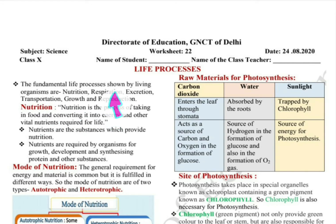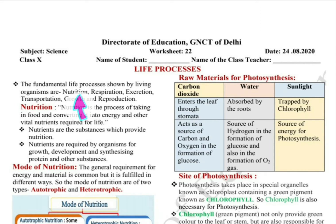What does life process mean? It is necessary to maintain the living organism — whether it is a unicellular organism like amoeba, bacteria, paramecium, plasmodium, or multicellular organisms like trees, plants, humans, animals, dogs.